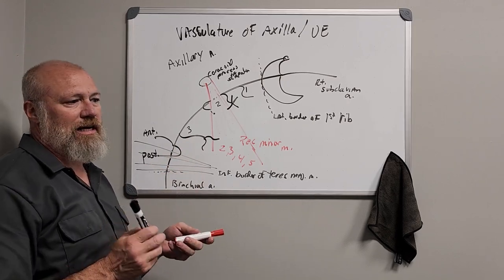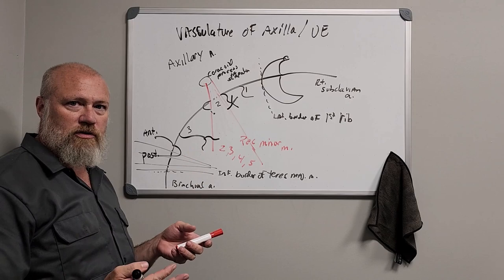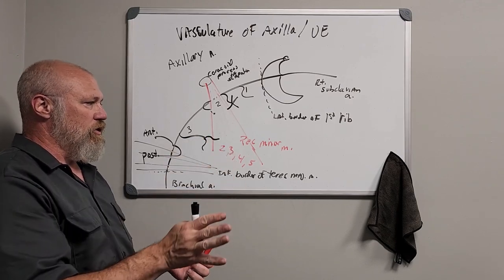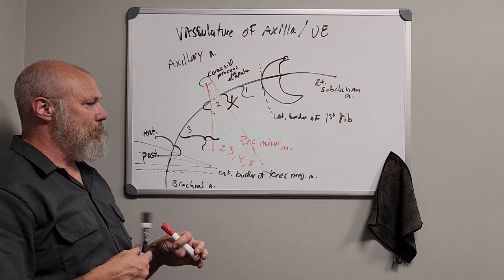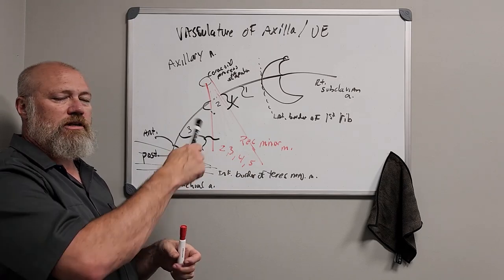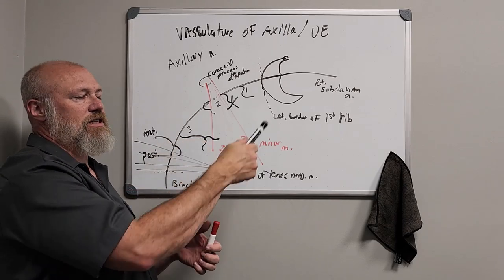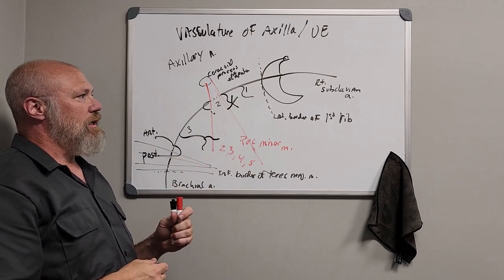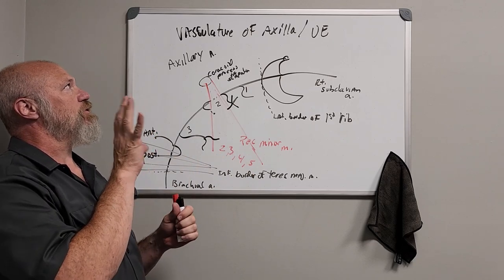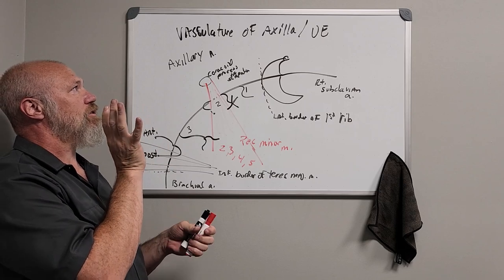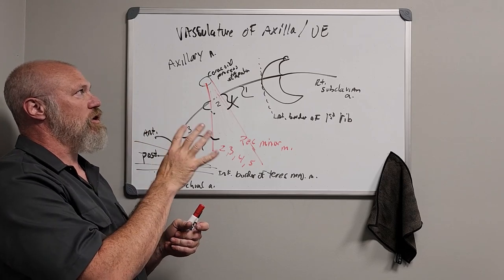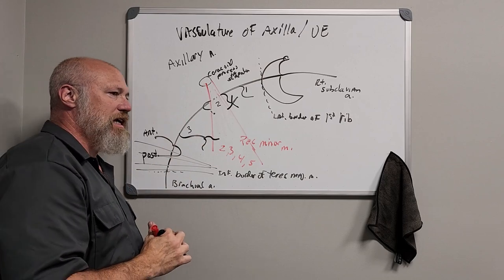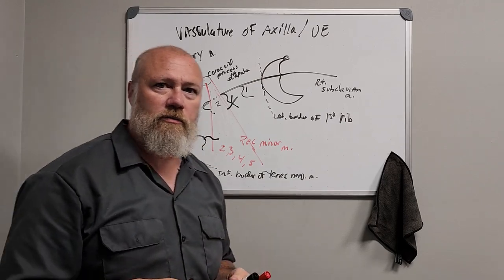The circumflex scapular artery is one branch of the subscapular artery. The other branch is the thoracodorsal artery, which supplies the latissimus dorsi and runs through the armpit with the thoracodorsal nerve. Those are the arterial structures of the axilla, simplified as best we can. Rewind the video as many times as you need, leave a comment below, and start looking for the other anatomy videos.